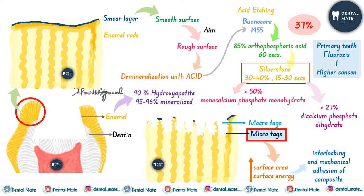In cases of primary teeth and fluorosis, higher concentrations of etchant are used. In primary teeth, aprismatic enamel rods are present — their mineralized content is less and organic content is more, so a higher concentration of acid is needed to remove them.